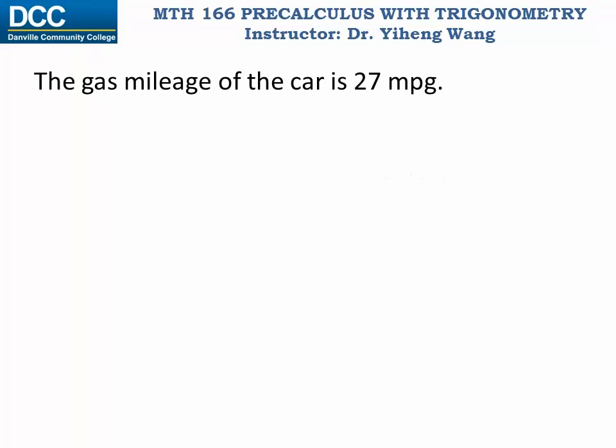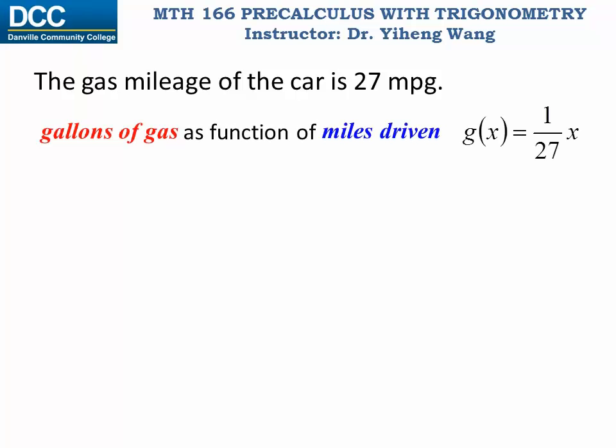If the gas mileage of a car is 27 miles per gallon, based on this relation we can write a function: gallons of gas consumed as a function of miles driven, g(x) equals 1 over 27 times x. In this case x, the independent variable, represents miles driven, and the output of this function represents gallons of gas.